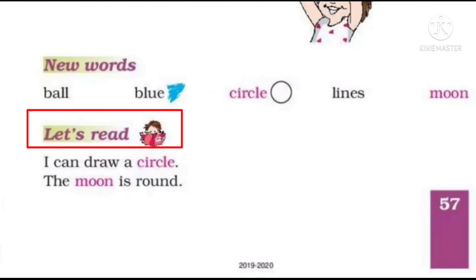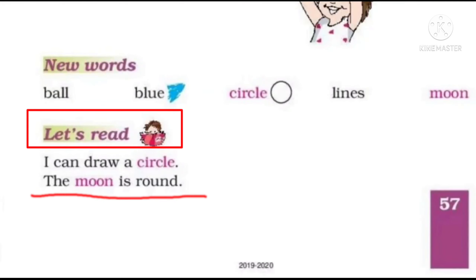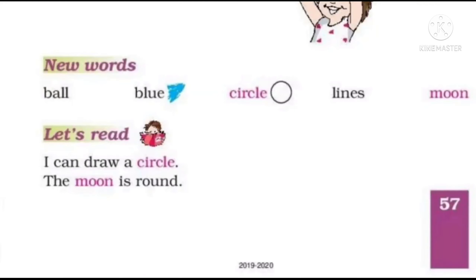Let's read. I can draw a circle. Yani main ek circle draw kar sakti hoon. I can draw a circle. Next: The moon is round. Moon kaisa hai? Round. Yani woh circle hi hai. Circle aur round ek hi hota hai. Okay?